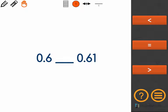This math problem is asking us to compare 0.6 to 0.61. I'm going to start by getting my place value markers.